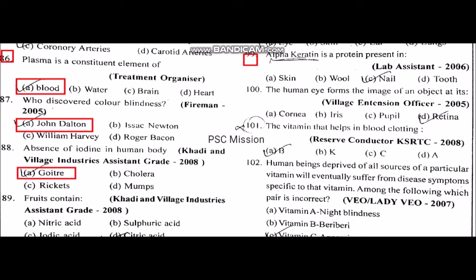The acid present in fruits is citric acid. Alpha carotene is the protein present in nails. The human eye forms the image of an object.